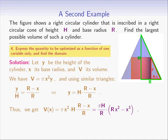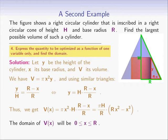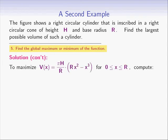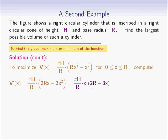Since x is the base radius of the cylinder, it must be a positive number less than the base radius of the cone r. So we take the domain to be the closed interval [0, r], which allows us to use the extreme value theorem to identify the maximum. To maximize v, let's compute the first derivative: v prime of x equals (pi h / r)(2rx minus 3x squared), which can be rewritten as (pi h / r) times x times (2r minus 3x). Treating h and r as constants.